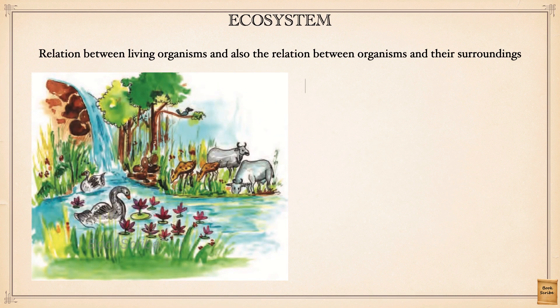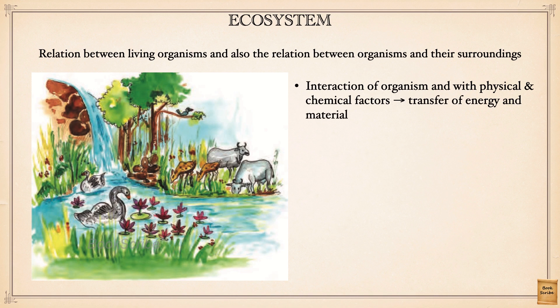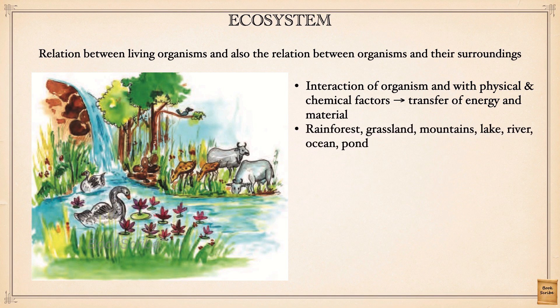This is called an ecosystem — a system where there is interaction between living beings among each other and also with physical features like land and water, and chemical factors like minerals, carbon, and oxygen. These are all linked by the transfer of energy and material. Material includes fruits, vegetables, food, and fertilizers; energy includes the energy inside food or fertilizers. Ecosystems include rainforests, grasslands, deserts, mountains, lakes, rivers, oceans, and even a small pond.